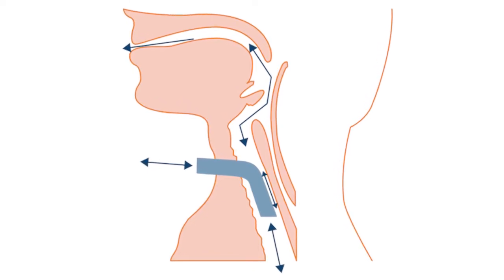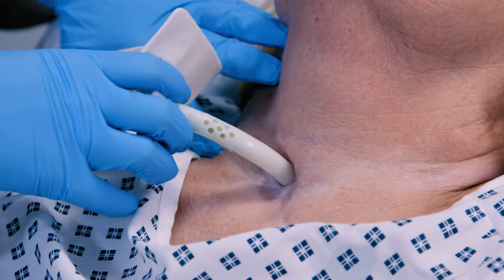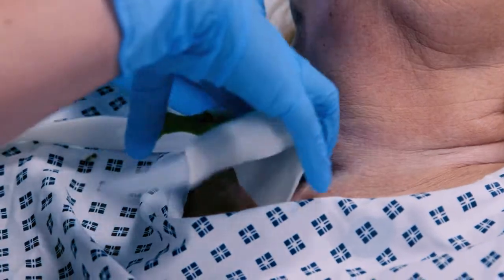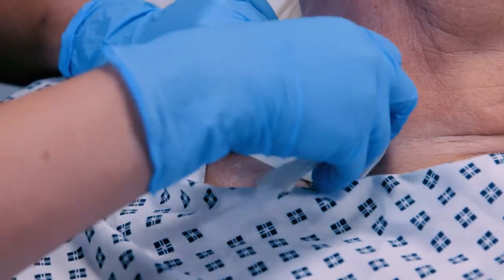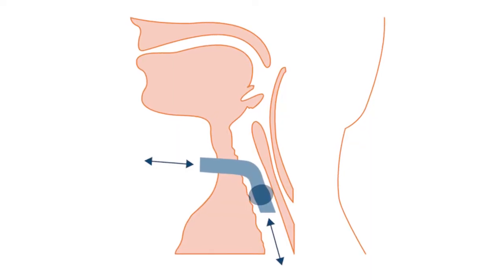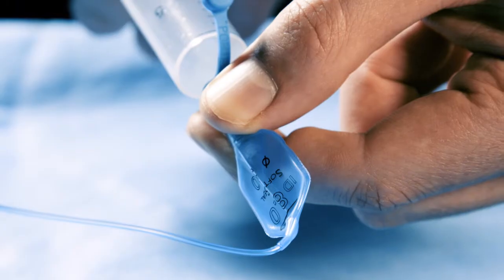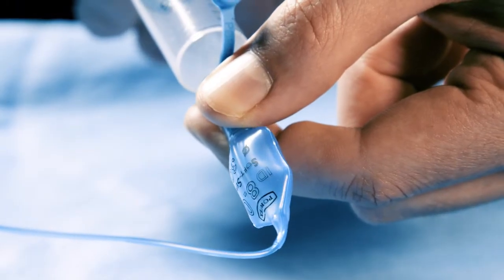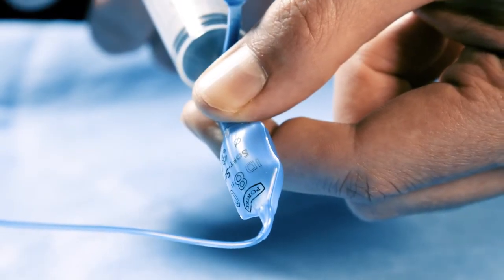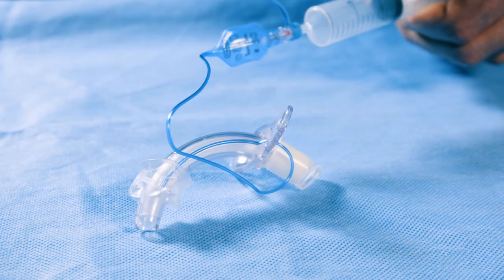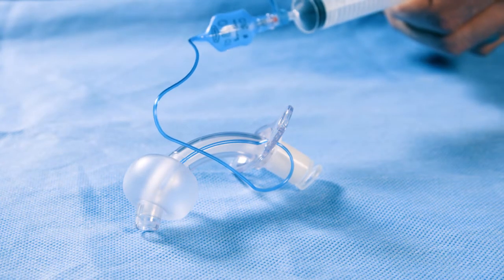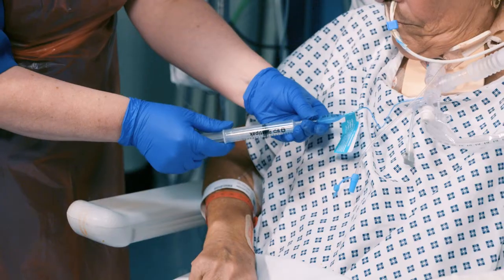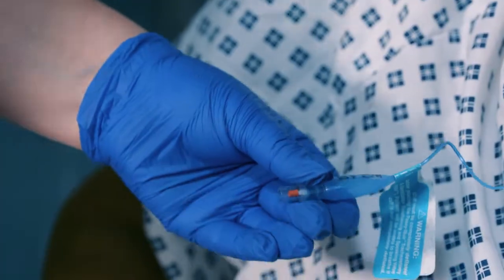A cuffless tube is useful because it allows some airflow through the upper airway. It's also a simple tube and it's safer — if it becomes obstructed, the patient can potentially breathe through their normal upper airway. A cuffed tube has a balloon which we can inflate, and that allows us to ventilate patients without air leaking out around the outside of the tube. It can also help reduce aspiration of oral contents when somebody's swallow isn't as good as we'd like.